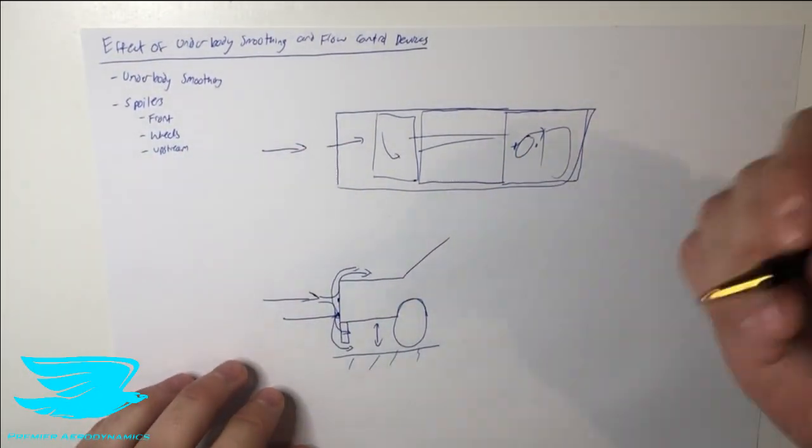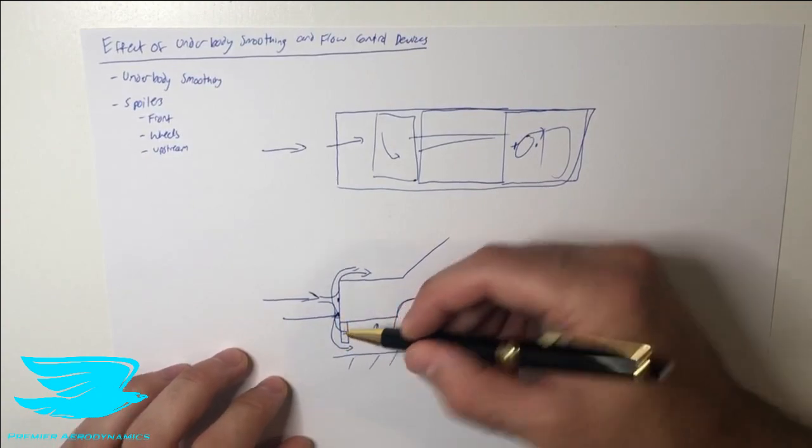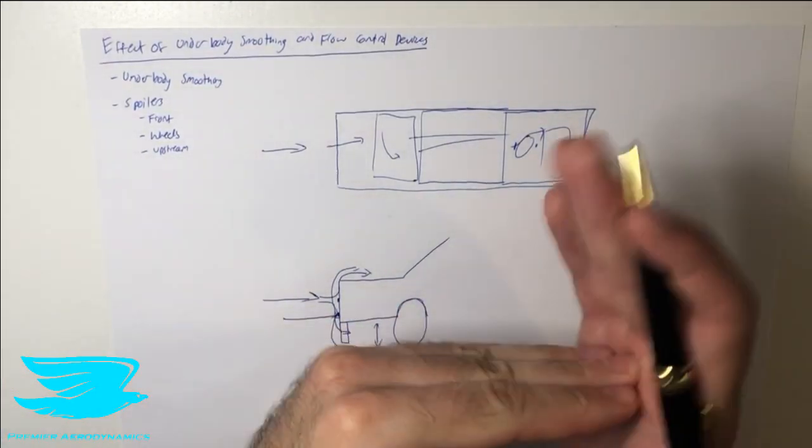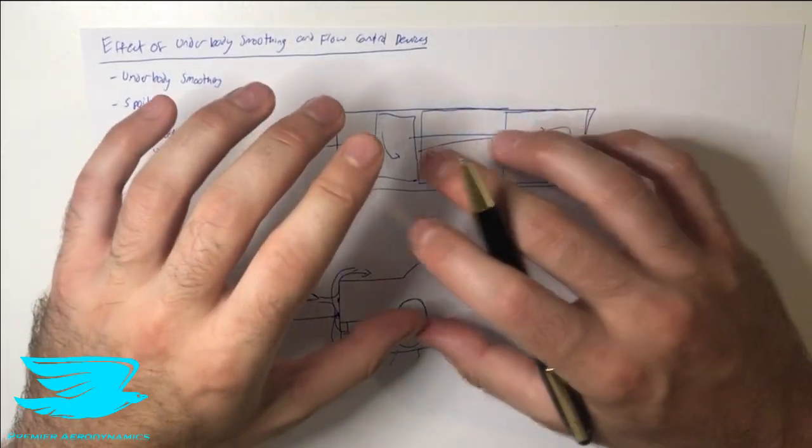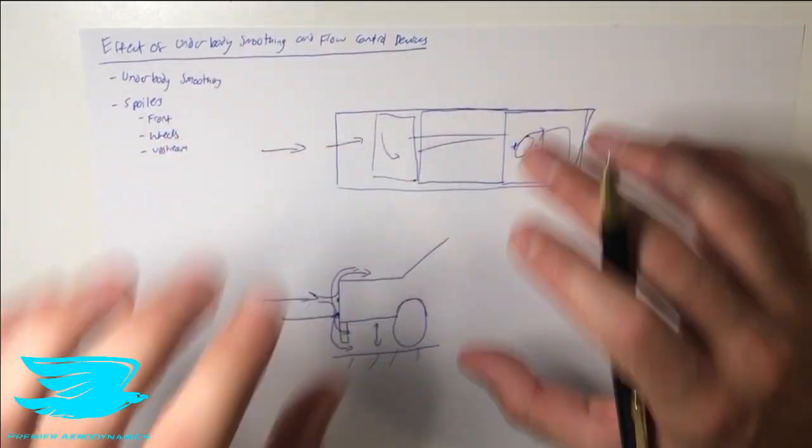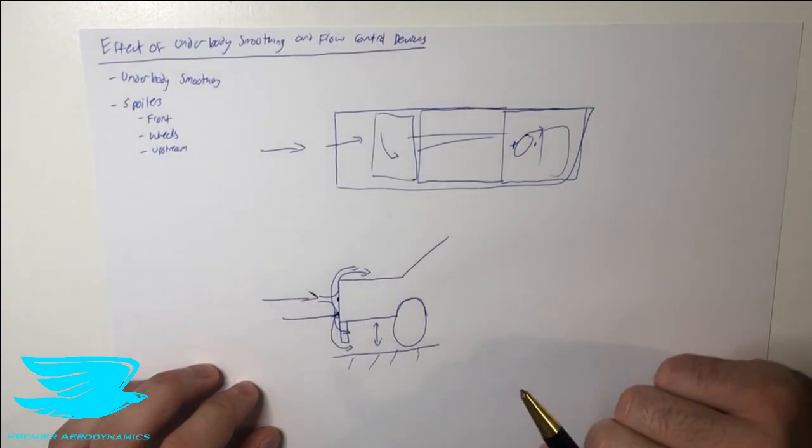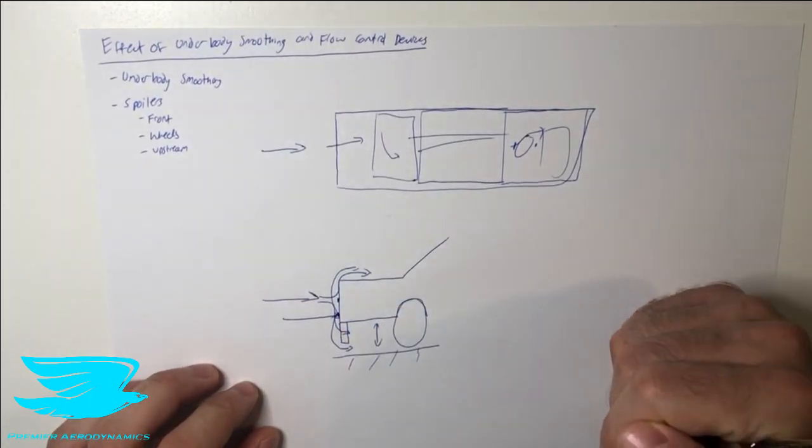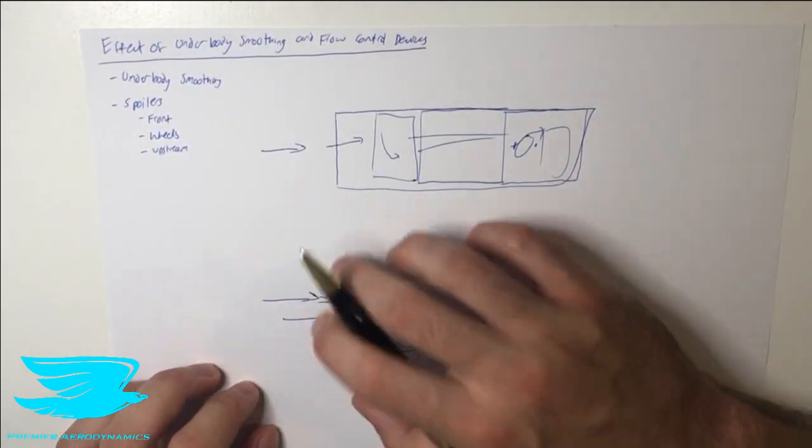Now we do get a drag penalty in terms of this setup because we obviously have a greater frontal area and the flow just coming in front and hitting it. But because we can reduce how much flow hits the underbody, often we can reduce the entire drag of the car just through extending the bottom of this vehicle here, the front of it. That's the front spoiler.